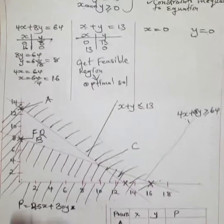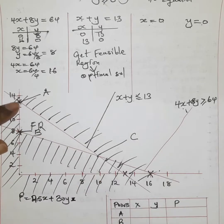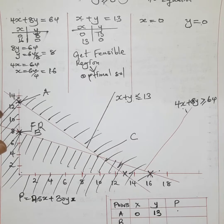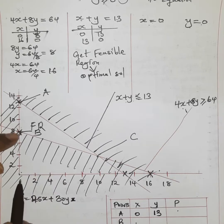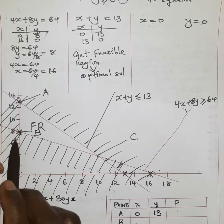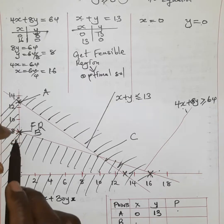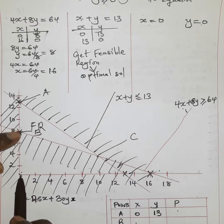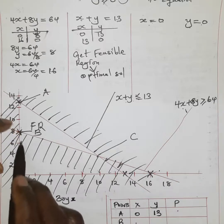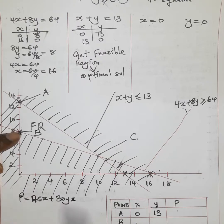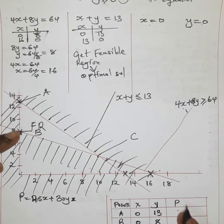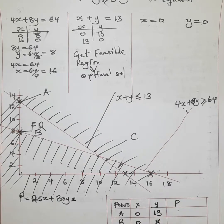For point A, X is 0 and Y is 13, and we get the value of P. For point B, X is 0 and Y is 8, and we get the value of P by substituting into the objective function.